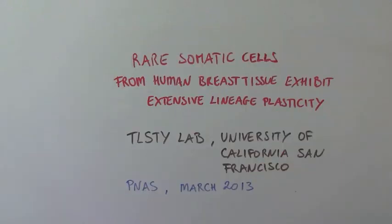These scientists are the members of the Tlisti Lab at the University of California in San Francisco, and their findings were published in their paper titled Rare Somatic Cells from Human Breast Tissue Exhibit Extensive Lineage Plasticity, published in the Proceedings of the National Academy of Sciences in March 2013.